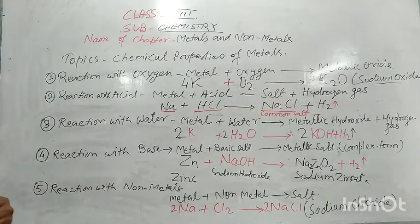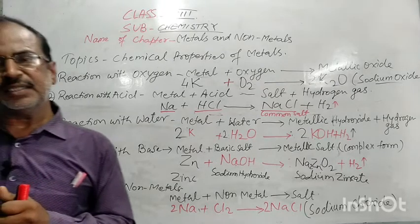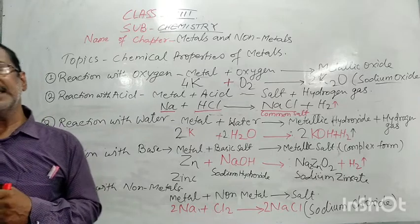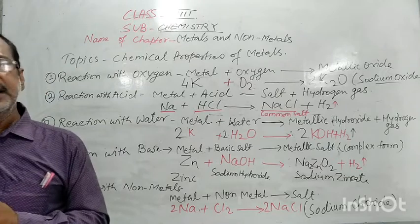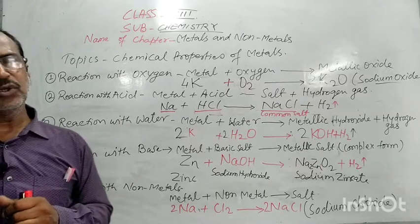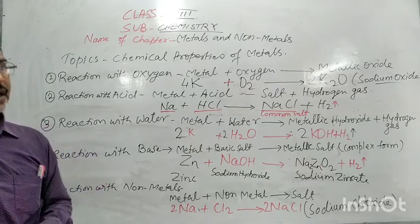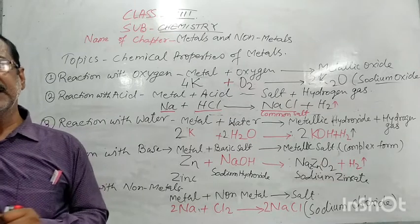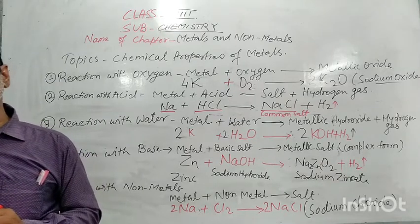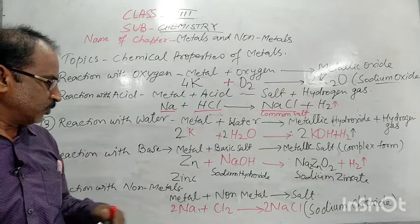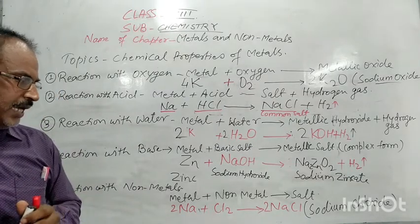The last reaction is the common reaction: when a metal reacts with a non-metal, it forms a salt. This reaction is called a combination reaction because one metal and one non-metal combine to give a metallic salt. For example, when sodium reacts with chlorine, it forms sodium chloride. Sodium with chlorine gives sodium chloride, which is called salt.